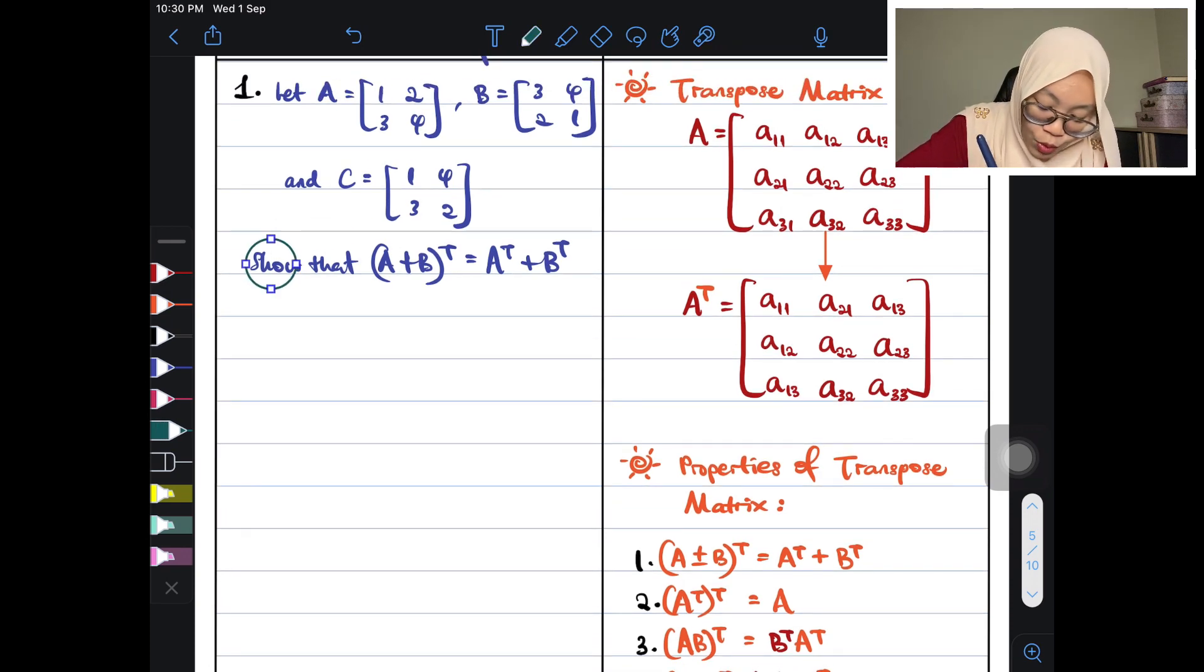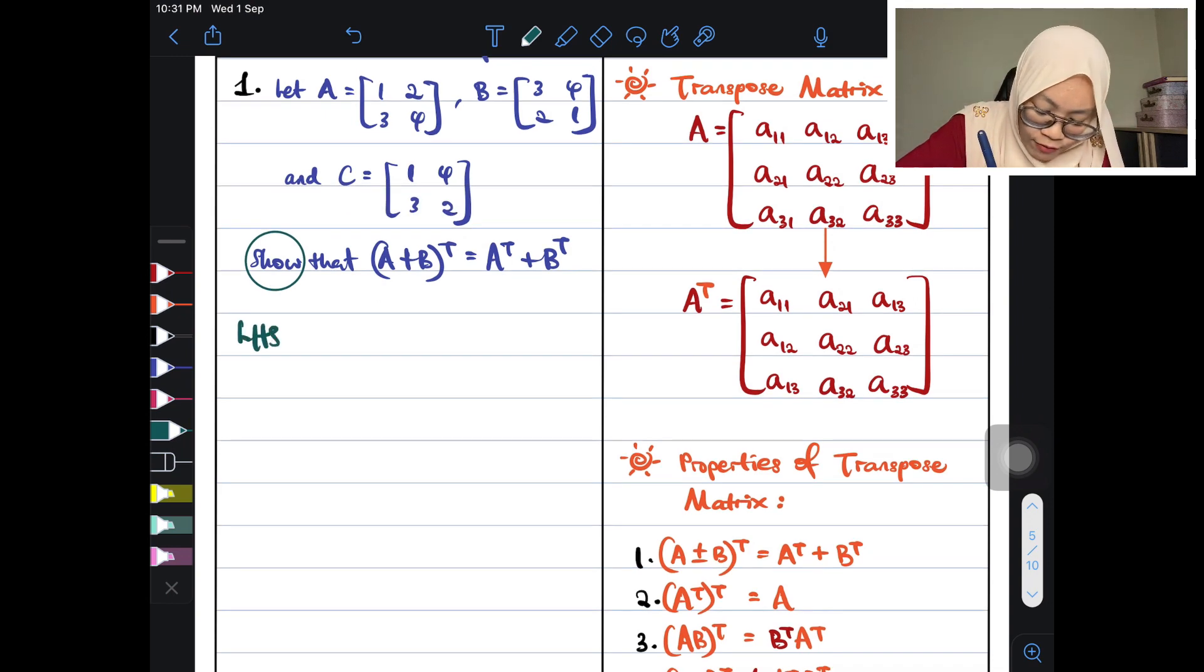Now, when you have show, as I said so many times already in all of my videos, whenever you have show, you must have left-hand side LHS equal. So, LHS is equal to A plus B, the whole thing transpose it. So now, I'm gonna need some big bracket here.